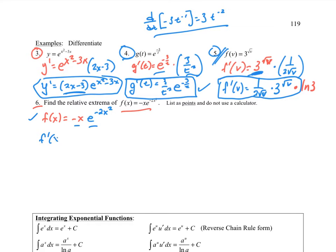f'(x) equals the first times the derivative of the second. So I write this down as it is and multiply by -4x. And then plus the second times the derivative of the first, which would just be -1.